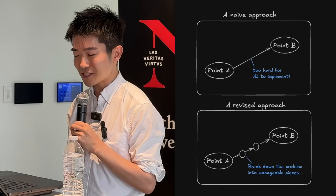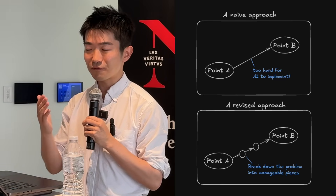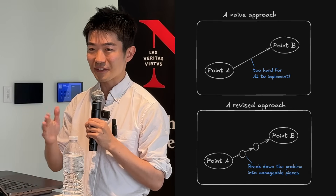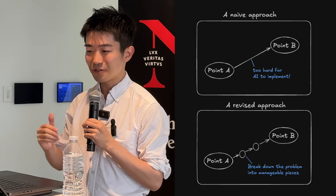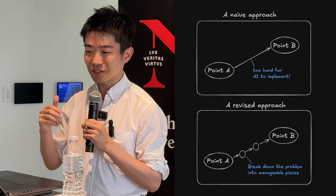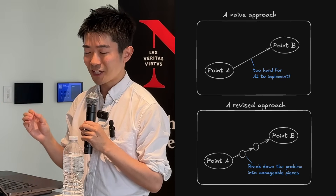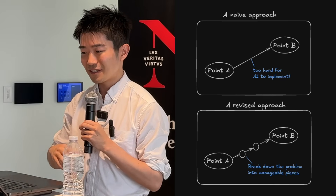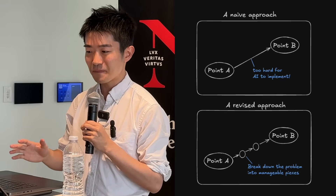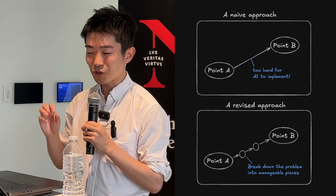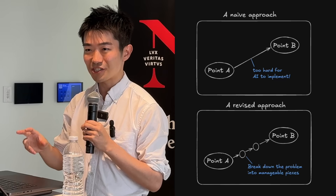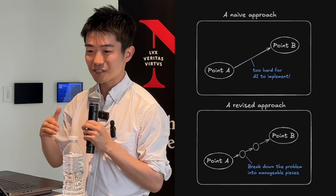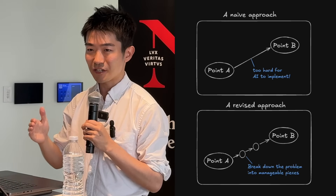Another way to visualize this: you start from point A — it could be nothing, an empty state, or a particular commit in your project — and you want to get to point B. That might be implementing a feature, implementing a project, fixing a bug, whatever that might be. If going from point A to point B directly is too hard, you need to break it down into manageable pieces so AI can take care of each one.